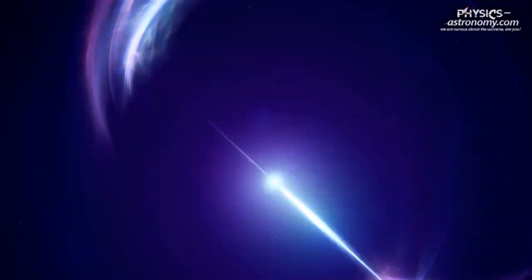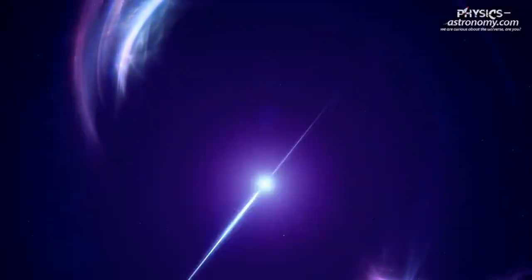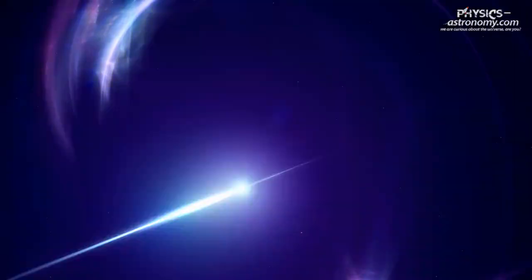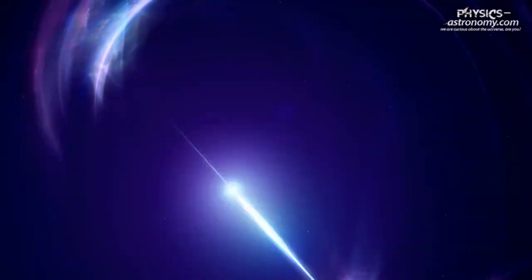This neutron star, known as M82X2, defies the Eddington limit by collecting 1.5 Earth's worth of material each year, leading to its off-the-chart brightness.